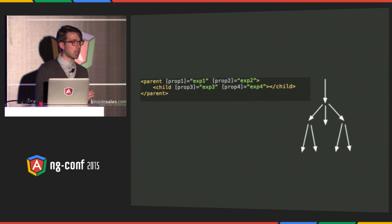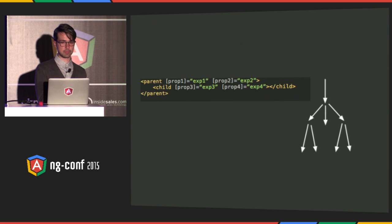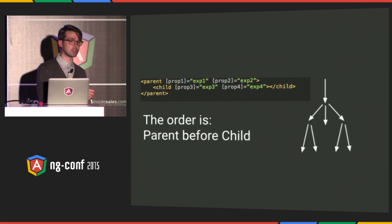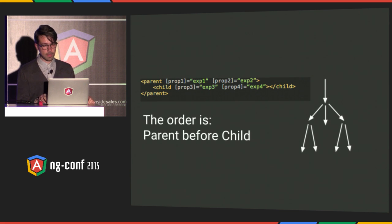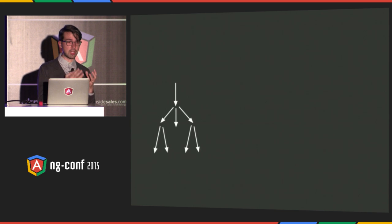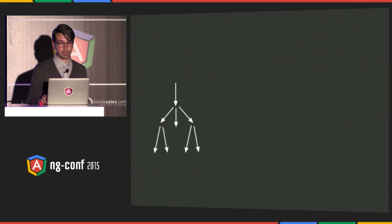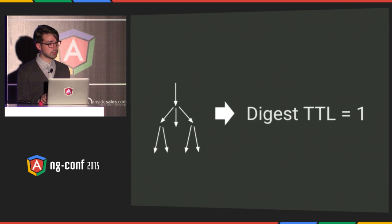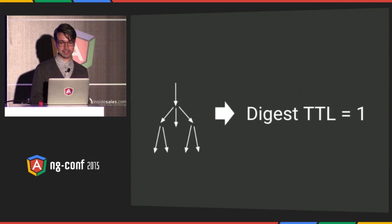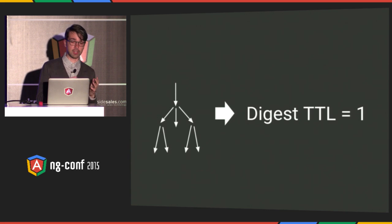In Angular 2, where we have a tree and cannot have cycles, we can answer these questions much better. We know exactly what gets checked and how many times. More importantly, the order of checks is determined by the template only — parent will always be checked before child, regardless of what parent and child are. Additionally, the new system is designed to get stable after a single pass. The number of digest iterations is fixed at one, and the whole concept of multiple digest iterations is gone.